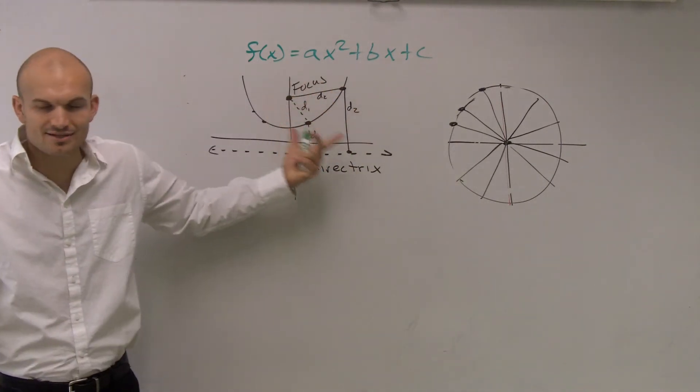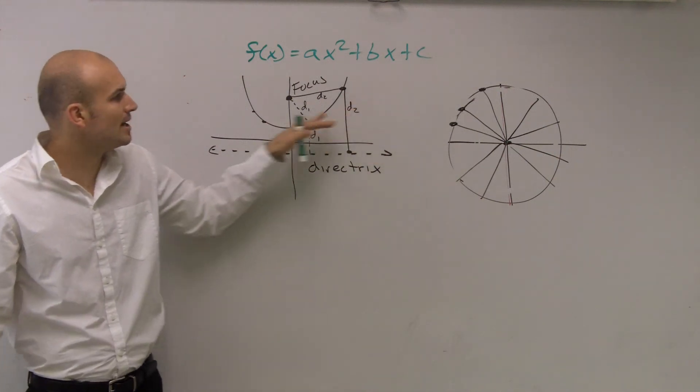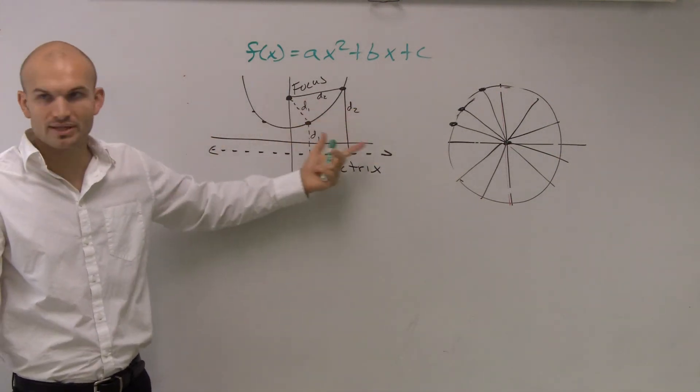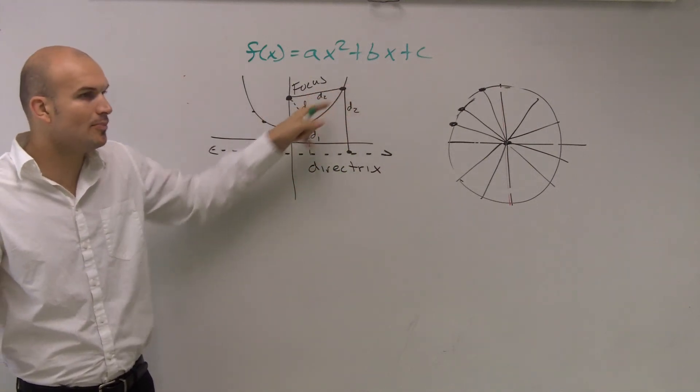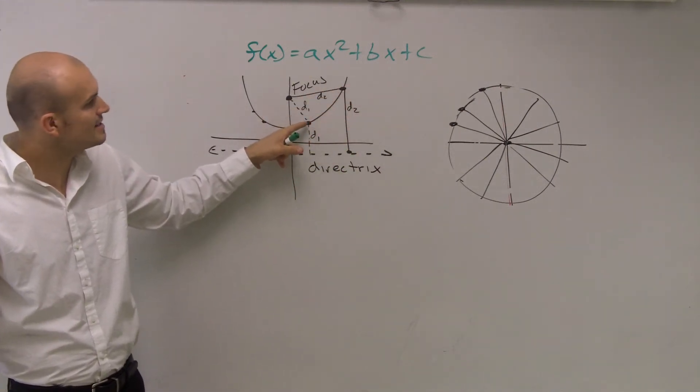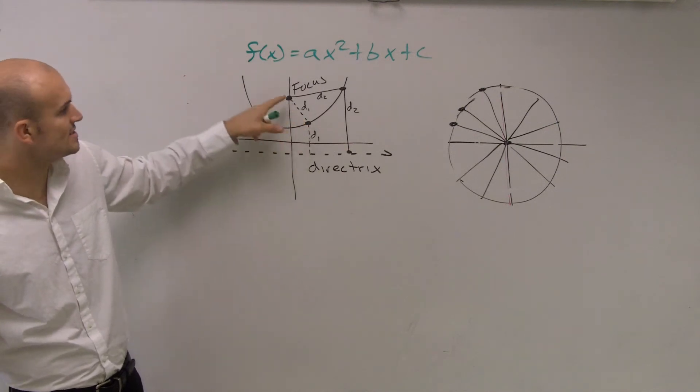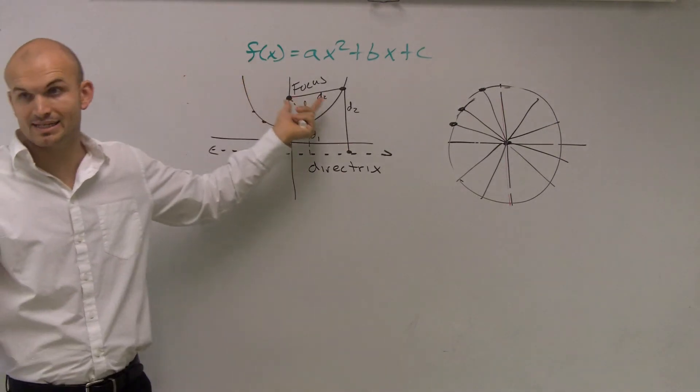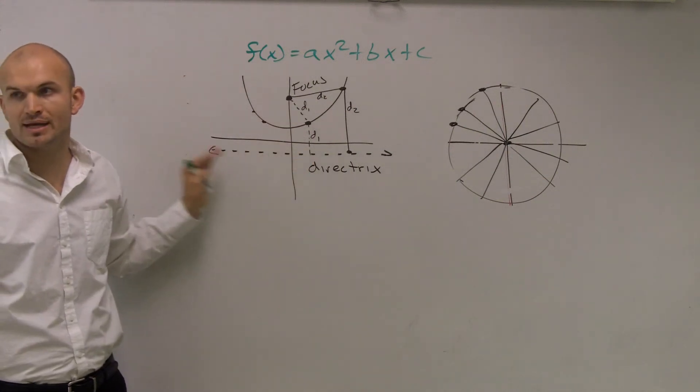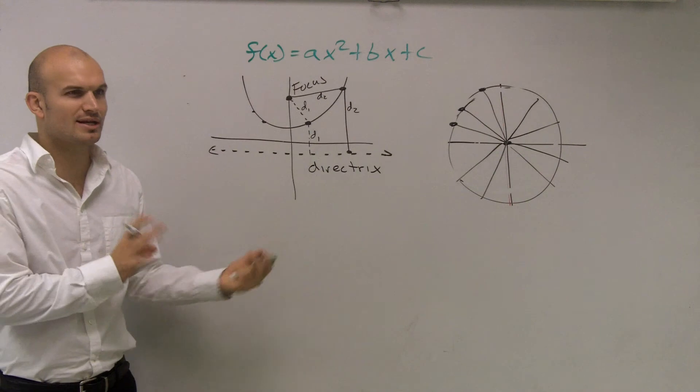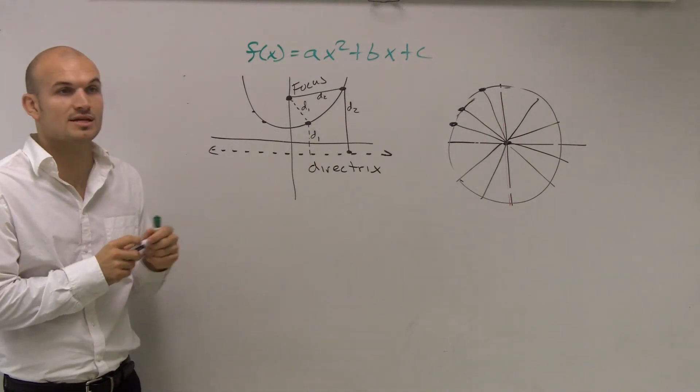The formal definition for our parabola is going to be the set of all points that is equal distance from its focus, which is going to be inside the parabola curve, to its directrix, which is going to be a line outside. And we're going to get farther into this in a second.